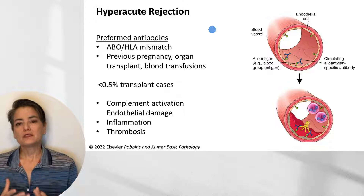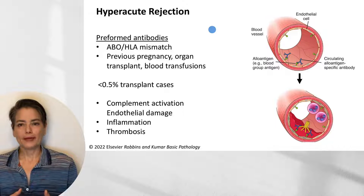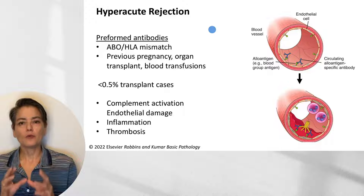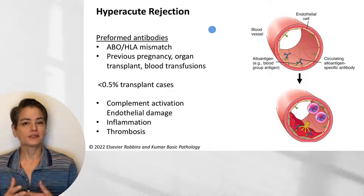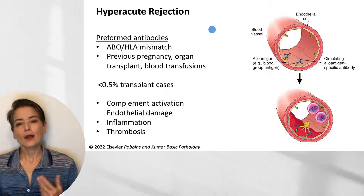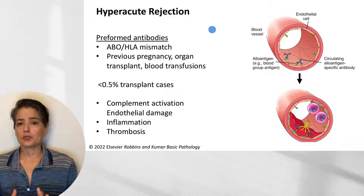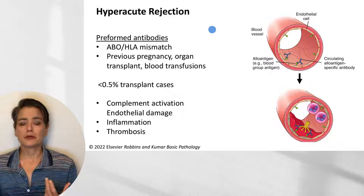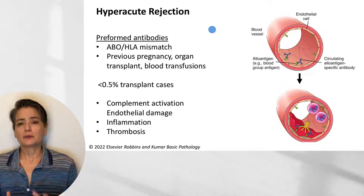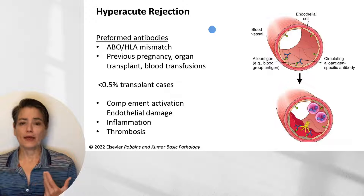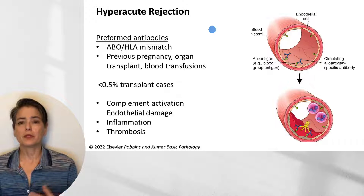What causes this is preformed antibodies — the recipient is already primed to attack the foreign tissue. This can be seen most dramatically with an ABO mismatch or an HLA mismatch, or more subtly due to multiple previous pregnancies in which antibodies are built up against paternal antigens, a previous organ transplant such as a failed kidney transplant needing replacement, or even multiple blood transfusions.